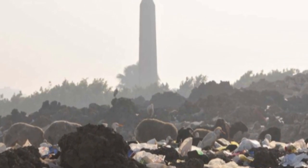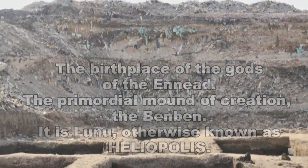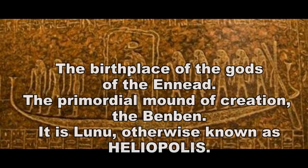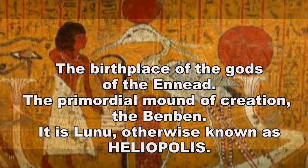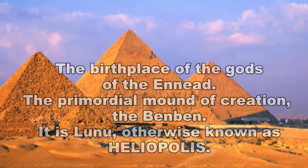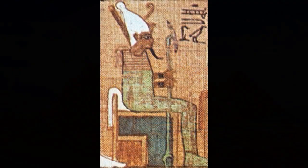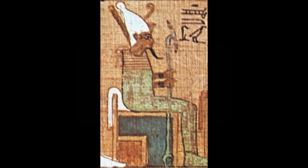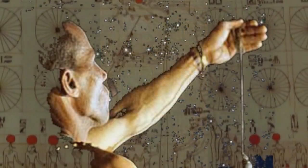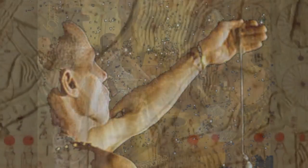Hidden under a mountain of trash in the northern suburbs of Cairo is the most important ancient site in lower Egypt: the birthplace of the gods of the Ennead, the primordial mound of creation, the Benben. It is Iunu, otherwise known as Heliopolis — the center of the lower Egyptian world. Heliopolis was a place so sacred that the pyramids of Giza and Abu Sir were aligned to this temple of the creator god Ra-Atum. Though much more than a temple, Heliopolis was a city and a center for astronomy.